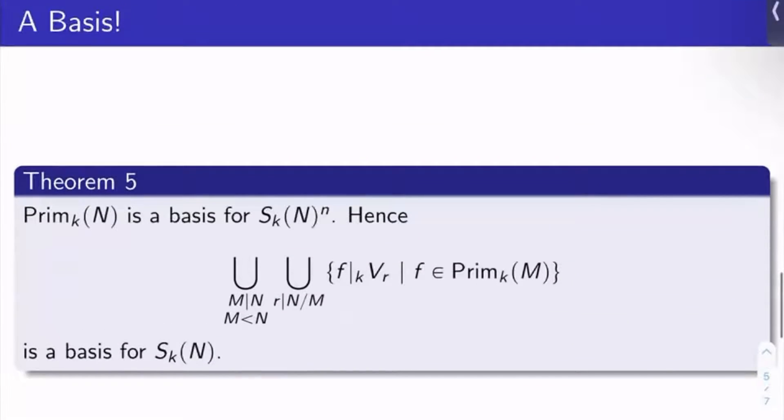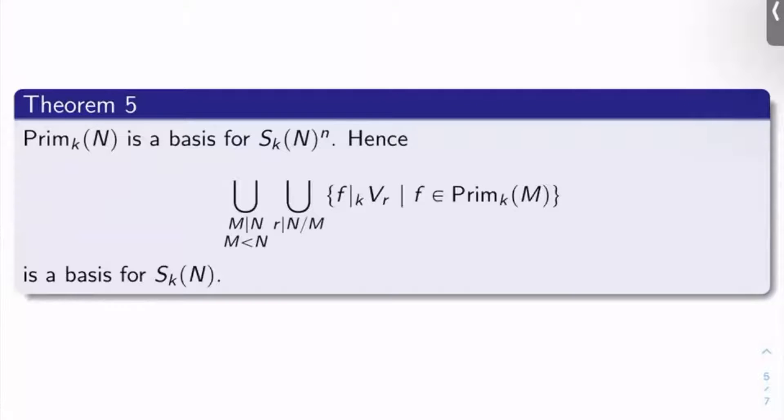And so theorem, this is where we're going to get our basis from. This is where we're going to remove that coprimeness condition mentioned at the beginning of the video. Prim_K(N) is a basis for S_K(N)^N. In particular, the union over all M properly dividing N and r dividing N over M of all the f bar K V_r's for f in Prim_K(M) is a basis for S_K(N). So this is fantastic. All of the various images of primitive forms form a basis for S_K(N) under those maps discussed earlier.